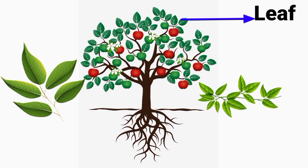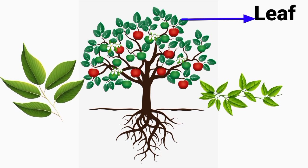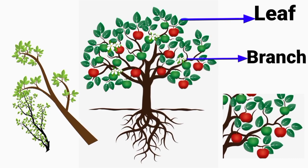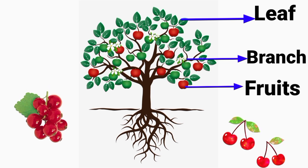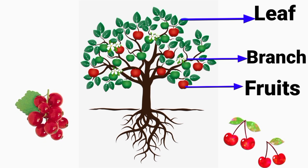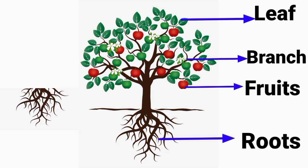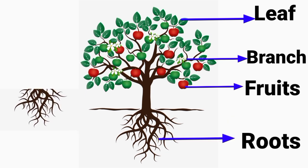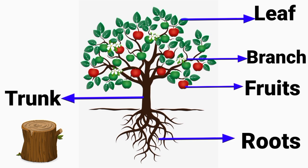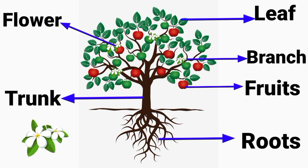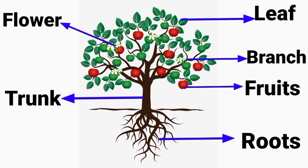This is the word: leaf. Branch. Fruits. Roots — that helps the tree to stay firm in the ground. Trunk. Trunk. And this is the word: flower. Flower. These are the parts of a tree.